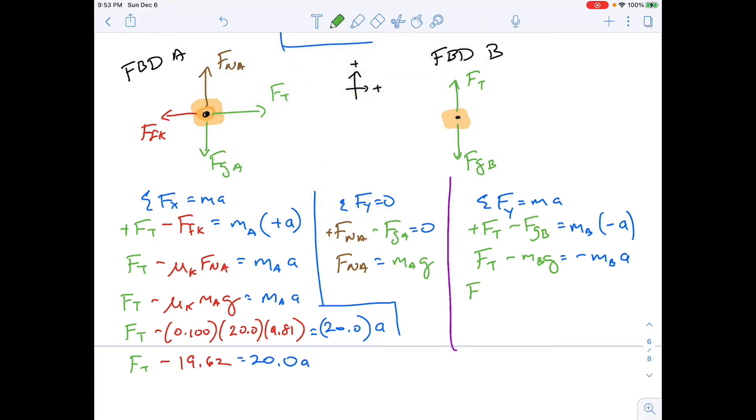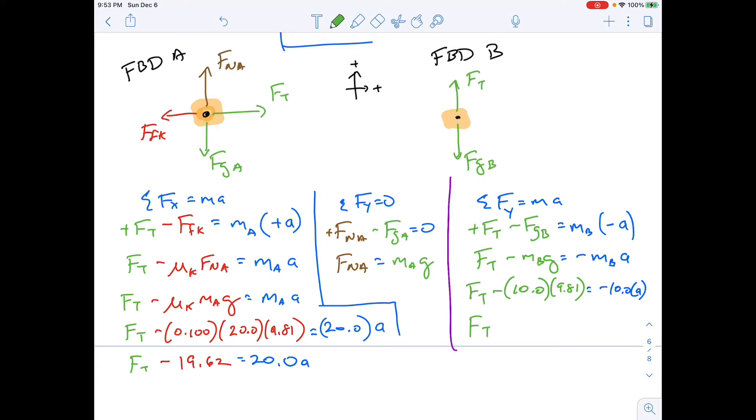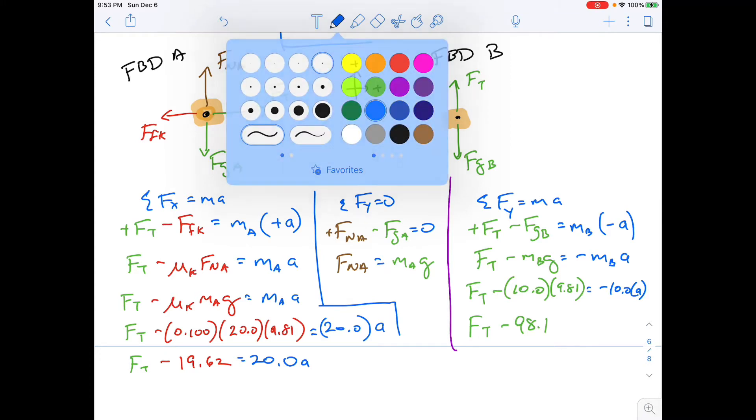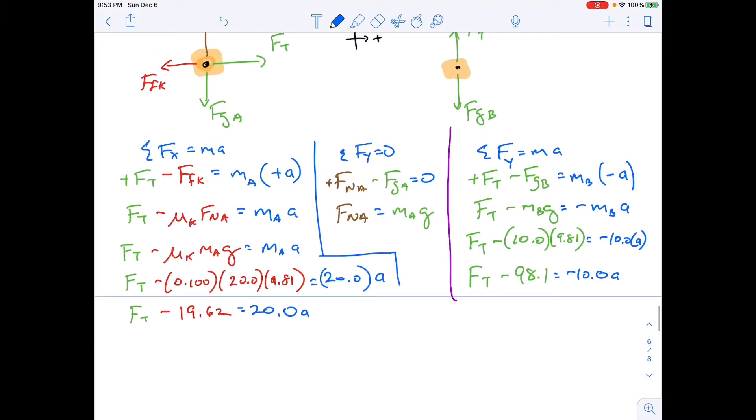And now we can plug in what we know, number-wise. FT minus 10.0, 9.81 equals negative 10.0 A. Now, let me rewrite the last line. So this is FT minus 98.1 equals negative 10.0 A.